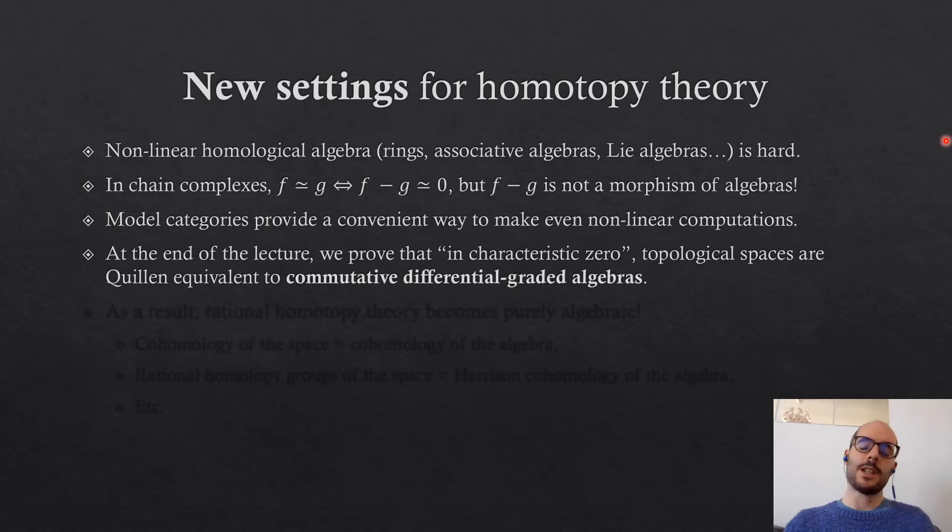At the end of this lecture, we're going to work in characteristic zero—we'll make precise what I mean by this—and study topological spaces in characteristic zero. We'll prove that they are Quillen equivalent, meaning they have the same homotopy theory as something purely algebraic called commutative differential graded algebras.